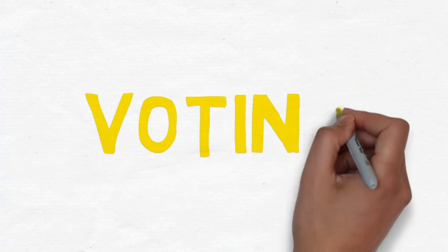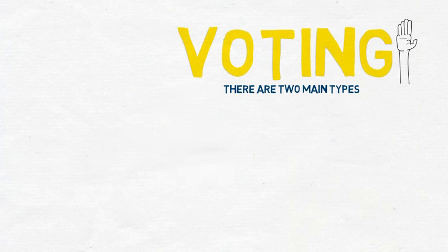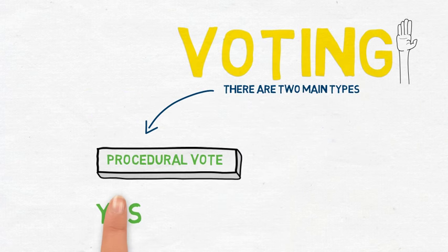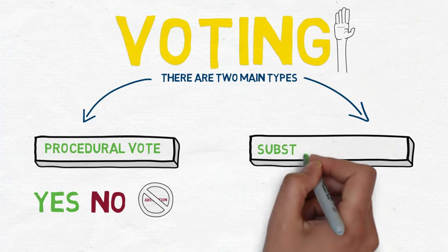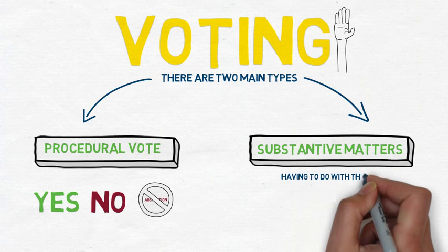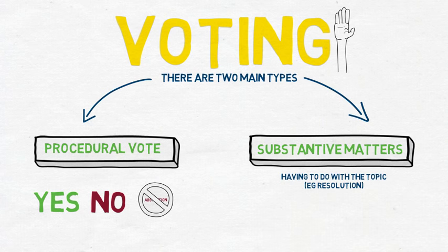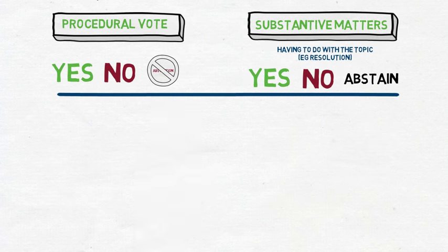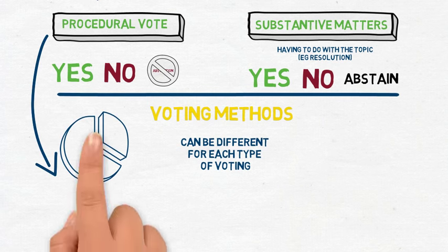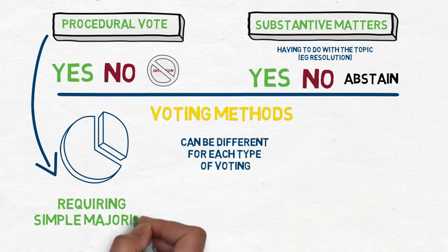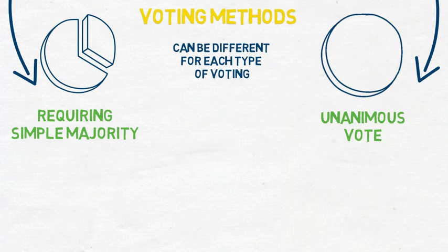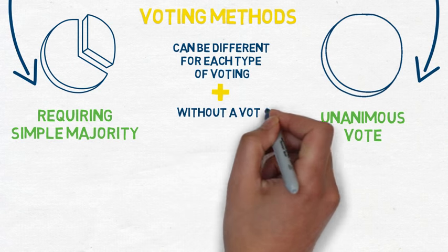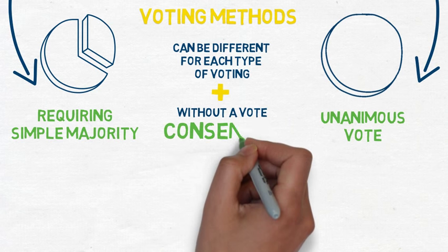Speaking of voting, there are two main types of votes. The first is a procedural vote, when only yes or no are options and abstentions are not allowed. The second is a vote on substantive matters having to do with the topic being discussed — on a resolution, for example — in which states may vote yes, no, or abstain. The voting methods can differ for each type; for example, it's possible to use a simple majority for procedural voting but require a unanimous vote of all parties in substantive matters. Decisions can also be adopted without a vote — in other words, by consensus.